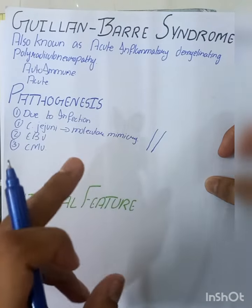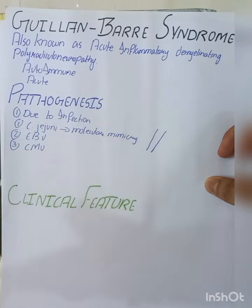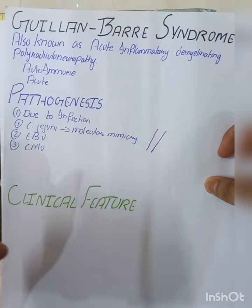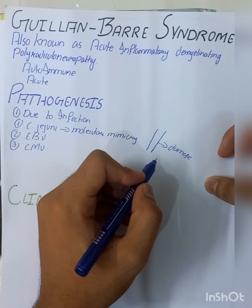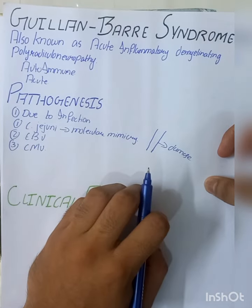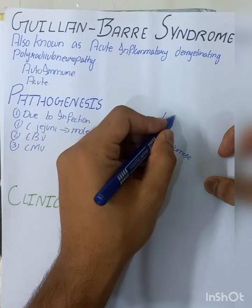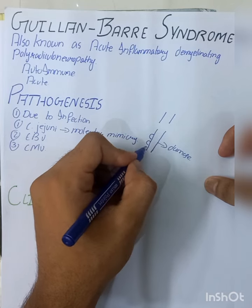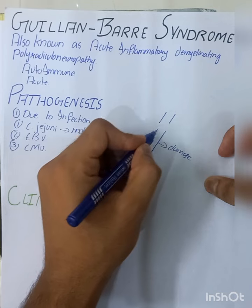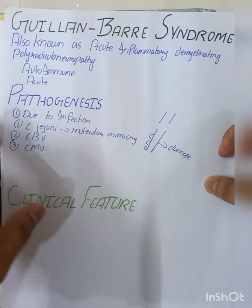Whenever antibodies are formed against Campylobacter jejuni, they cross-react with the axon or the myelin sheath, resulting in damage to the myelin sheath — called demyelination. When demyelination occurs, electrical signals cannot jump efficiently between neurons, the velocity of electric current slows down, and this results in weakness of the limbs.